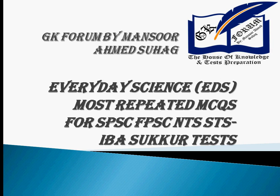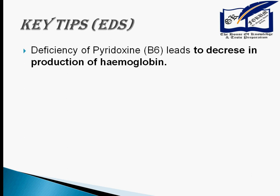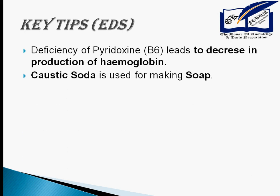Asalaamu Alaikum. Everyday Science Most Repeated MCQs, Part 4. Deficiency of Pyridoxine and Vitamin B6 leads to deficiencies in the production of Hemoglobin. Caustic soda is used for making soap.